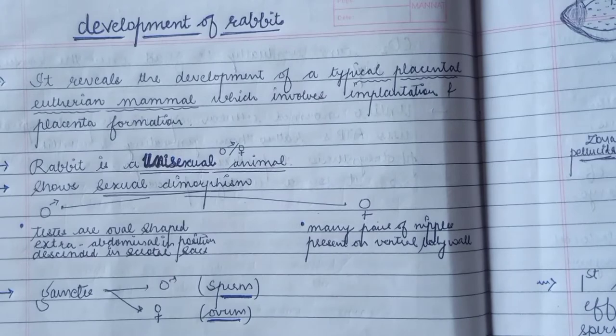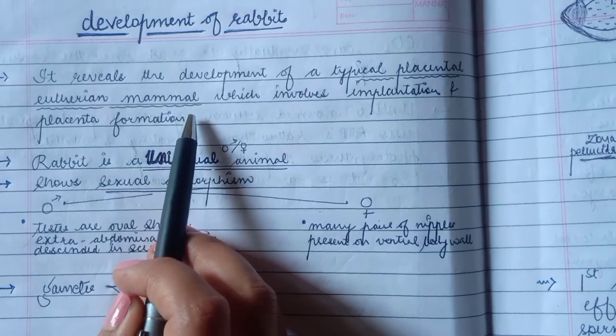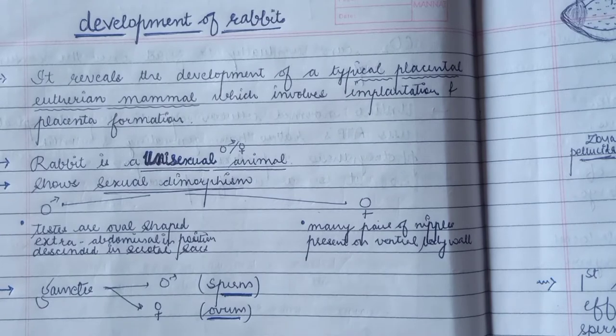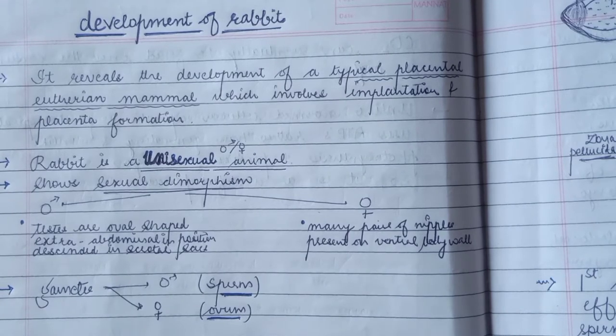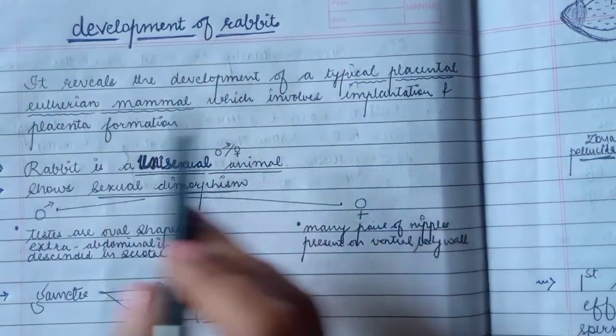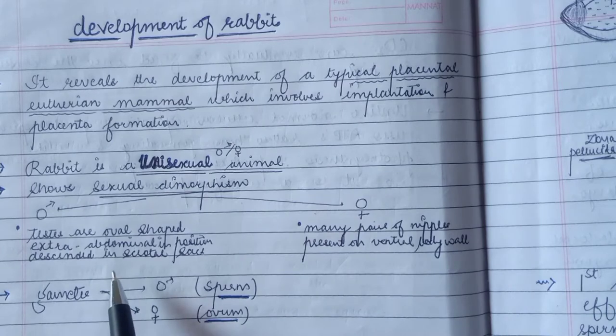First we need to know what kind of organism rabbit is. The rabbit is a typical placental eutherian mammal. We know it is an animal, a type of mammalian mammal. In mammals we have prototheria, metatheria and eutheria. The eutherian mammals directly develop young ones and rabbit also gets fully developed young ones. Implantation and placenta formation are very necessary inside the female organism because it is important for nourishment.